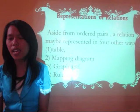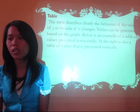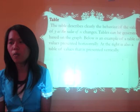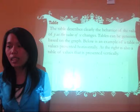The first representation is the table. The table describes clearly the behavior of the value of Y as the value of X changes. Tables can be generated based on the graph. Below is an example of a table of values presented horizontally, and at the right is also a table of values presented vertically.